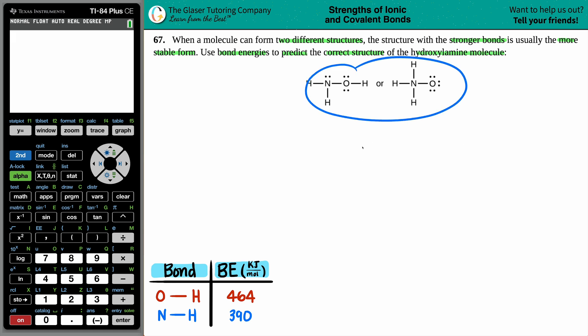And then they give us what potentially hydroxylamine could look like. It's a nitrogen either bound to two hydrogens and then an OH, or is it a nitrogen bound to three hydrogens and just an oxygen?